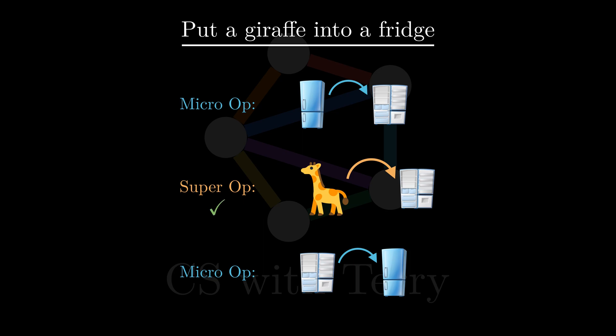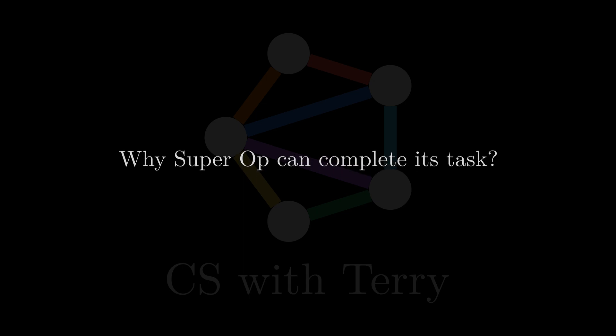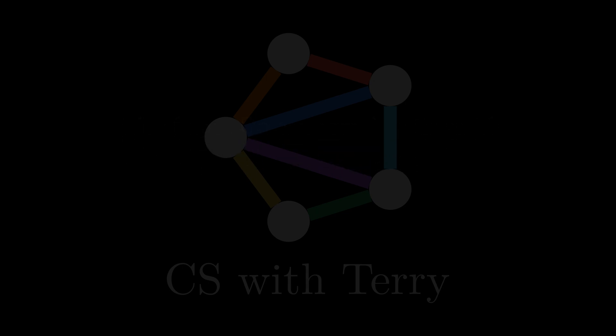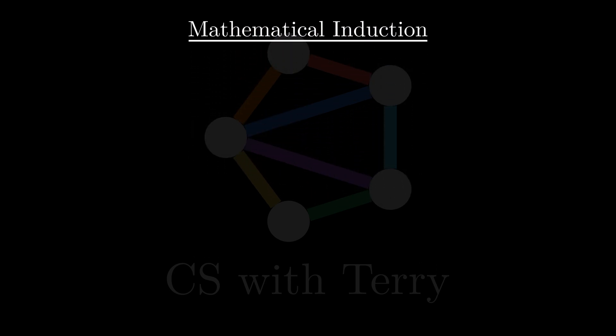You may ask: why do we believe that the super operation will be able to complete its task? Aren't we worried that something will go wrong somewhere? To answer this question, we need to understand the similarities between recursion and mathematical induction. Mathematical induction includes three steps: base case, induction hypothesis, and induction.